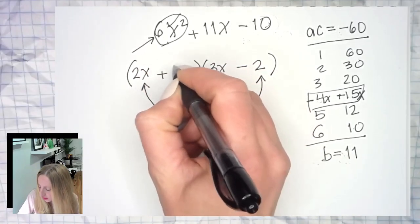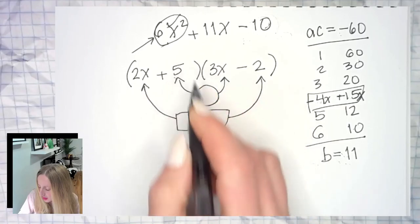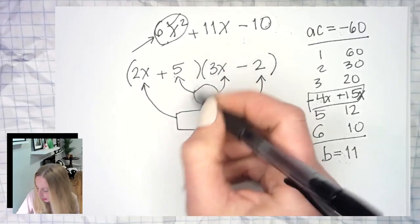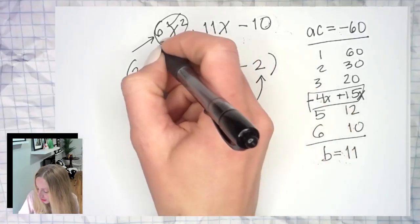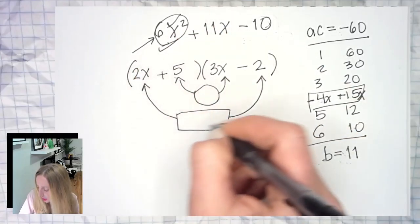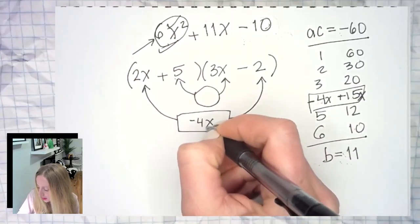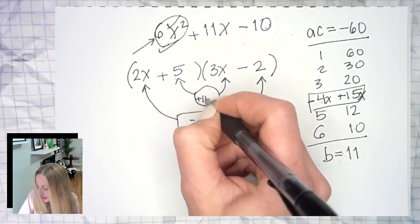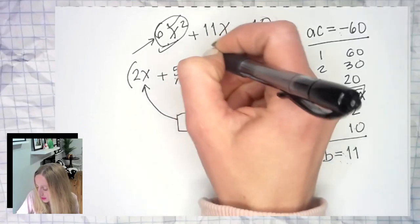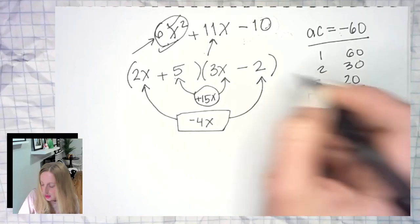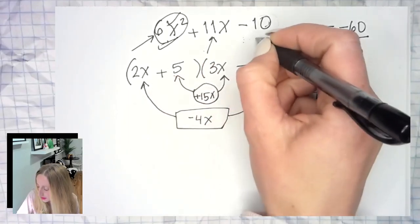So if you FOIL it back out to check, right? First times first, we said 6x² check. Outer was negative 4x. Inner is a positive 15x. And what do they combine to give us? 11x. And then last times last is negative 10.